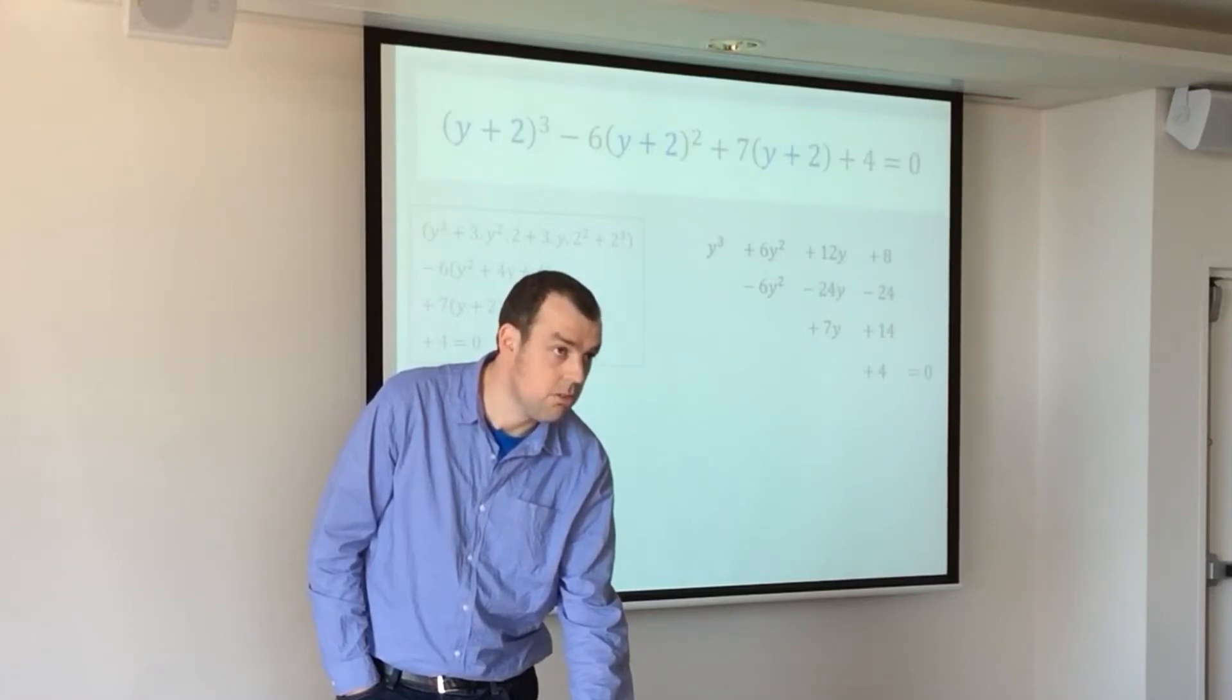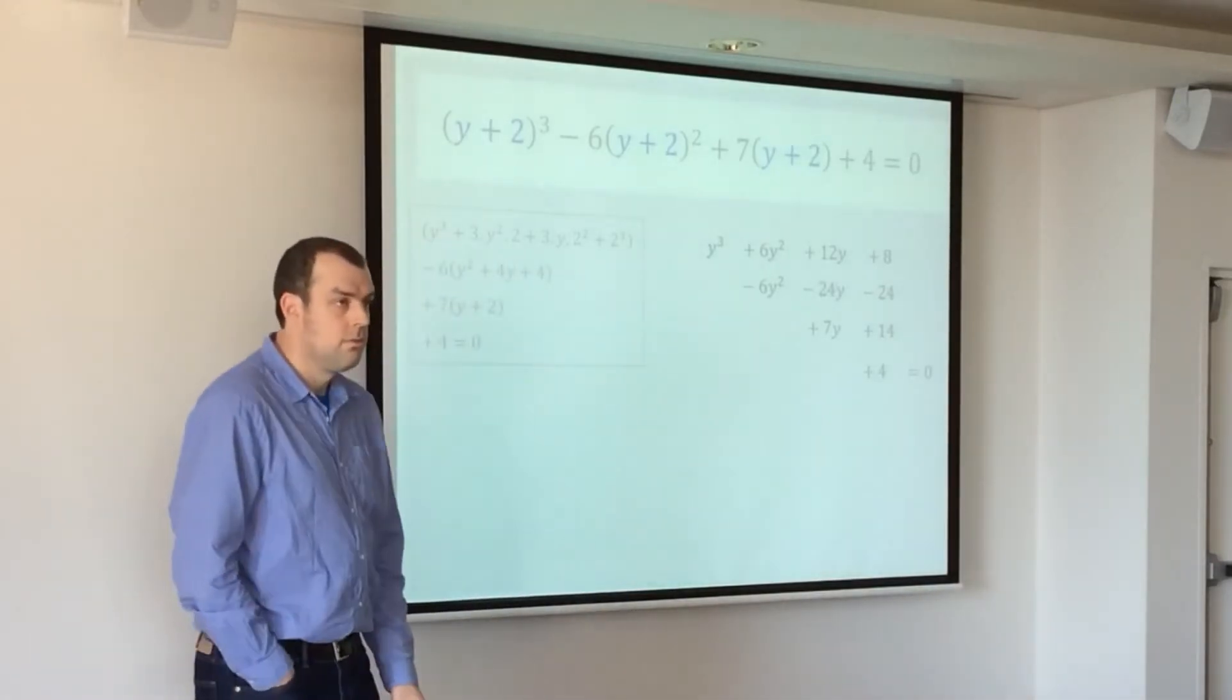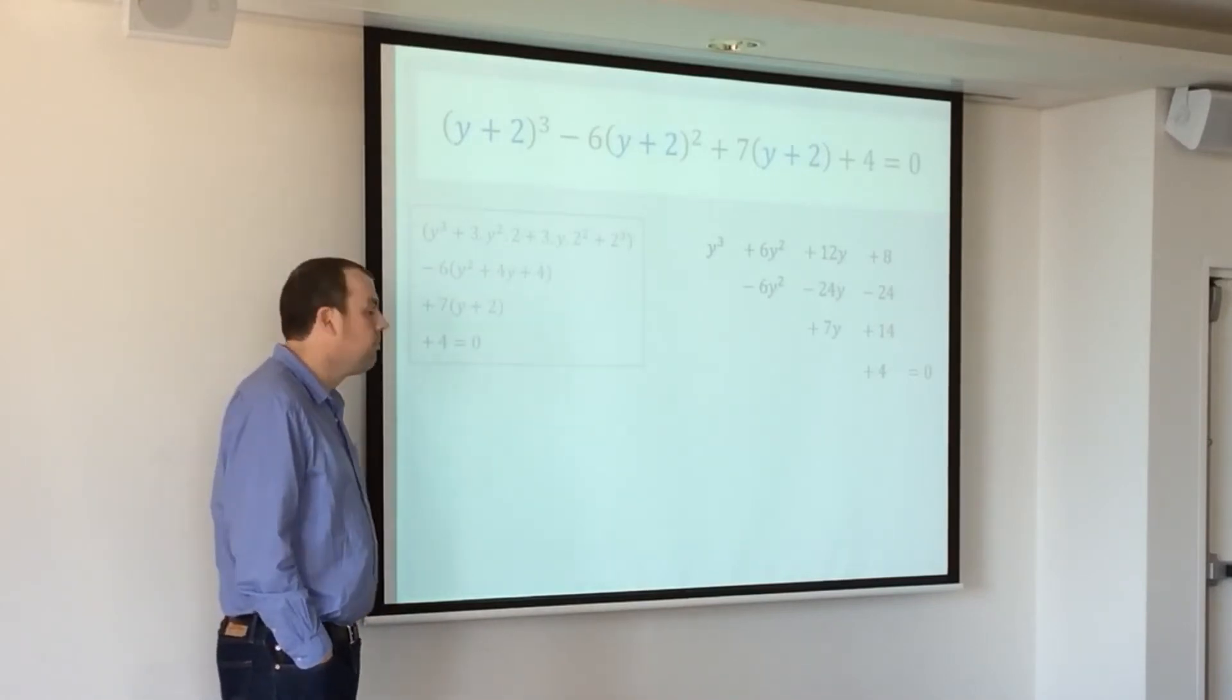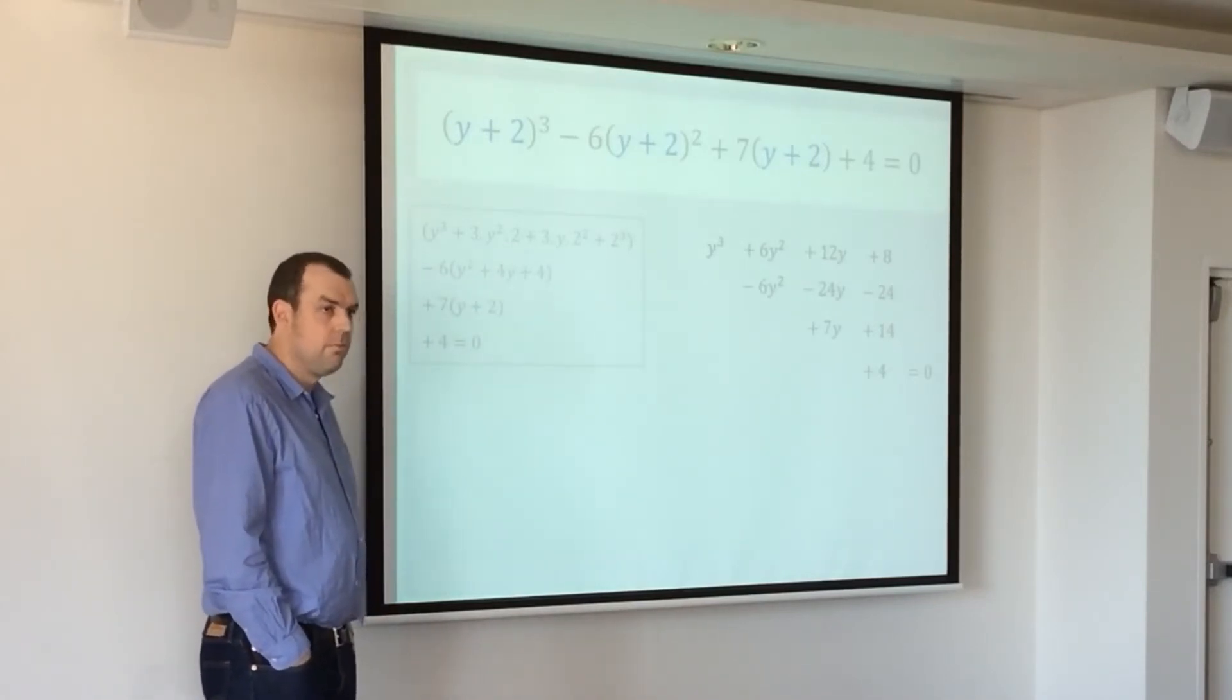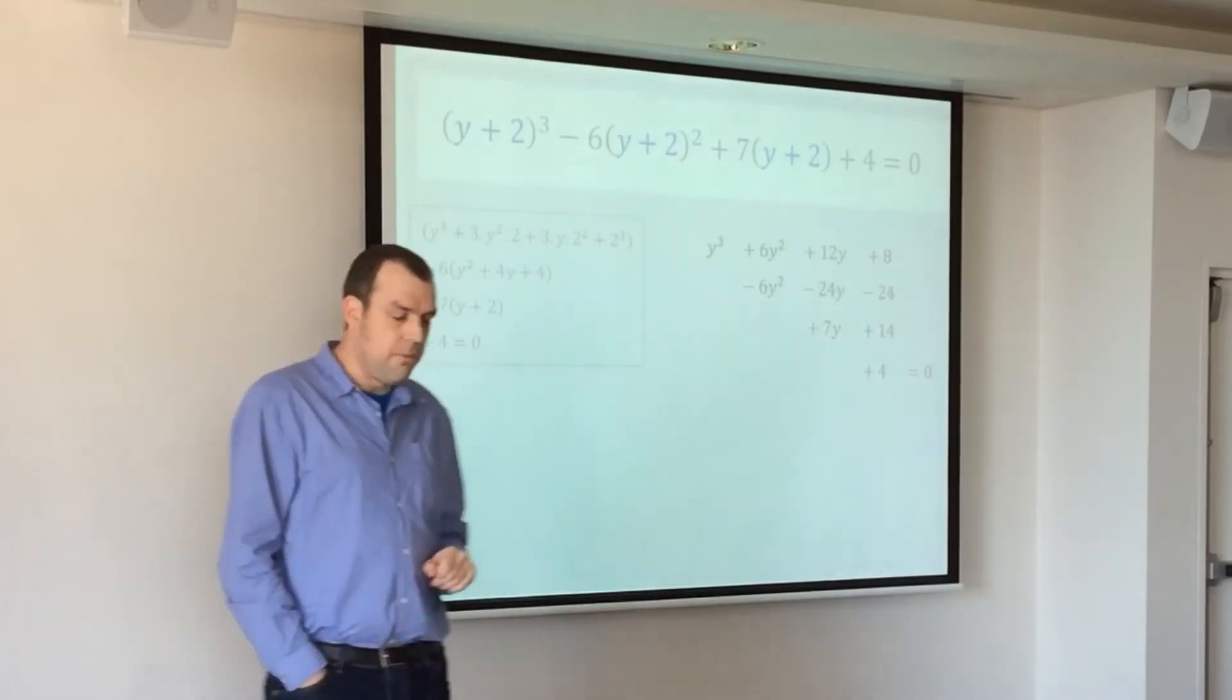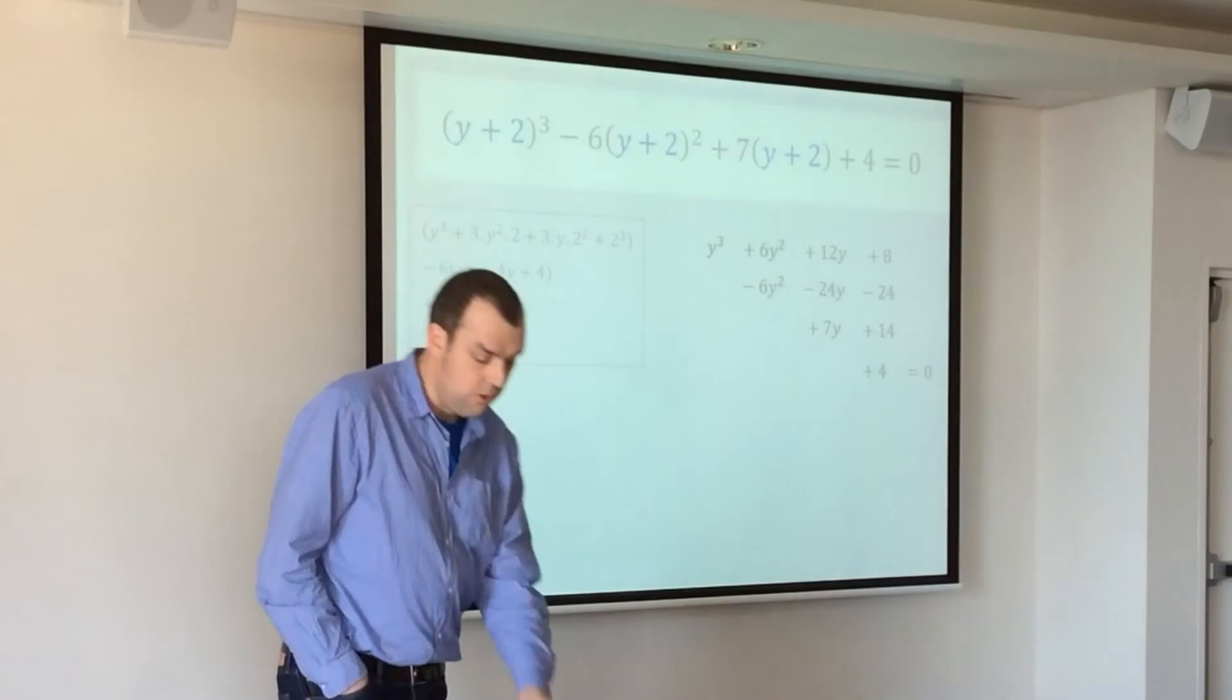What do you notice? Two things to notice. One important, one not. Y squared's gone. Y squared's gone. That was the point. That's always possible. Okay? That substitution of x equals y minus a third a will always get rid of the quadratic term.